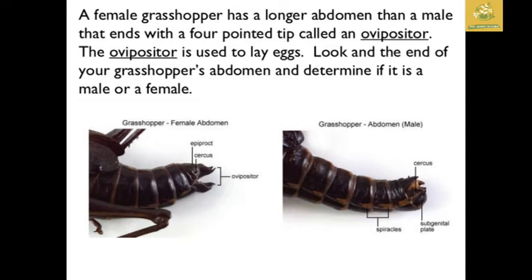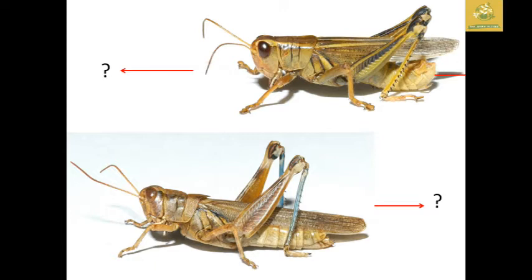A female grasshopper has a longer abdomen than the male because she has a four-pointed tip called the ovipositor, which is the female genital structure used for laying eggs. At the end of the grasshopper abdomen you can determine which is male and which is female by observing the abdomen. The upper one shown is female and the lower one is male.